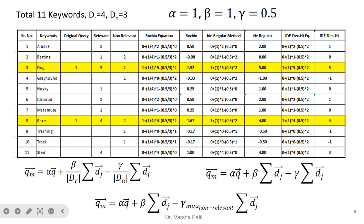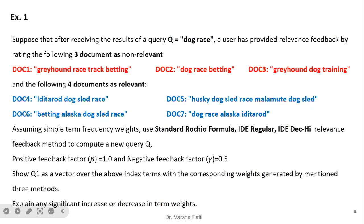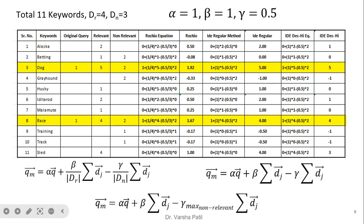Seven documents contain eleven keywords total. Relevant documents: 4; non-relevant: 3. Alpha = 1, beta = 1, gamma = 0.5. The original query 'dog race' has weights of 1 and 1. We count how many times each keyword appears in relevant documents and in non-relevant documents separately. For example, 'Alaska' appears twice in relevant documents. We then apply the three formulas using these counts.